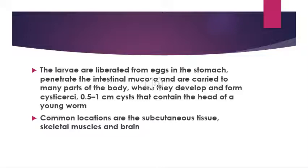Subarachnoid neurocysticercosis is the most severe form, occurring in about 5% of hospitalized cases, and may be associated with chronic arachnoiditis and/or mass effects due to cyst enlargement. It may develop as a result of local inflammation and in some cases may be associated with communicating hydrocephalus, vasculitis, meningitis, and stroke.